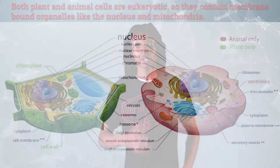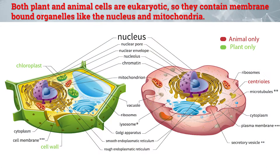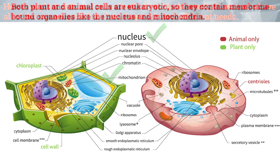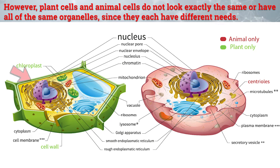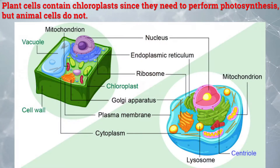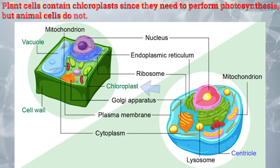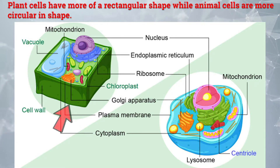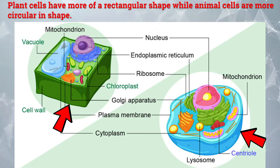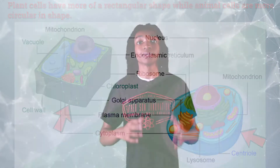Both plant and animal cells are eukaryotic, so they contain membrane-bound organelles like the nucleus and mitochondria. However, plant cells and animal cells do not look exactly the same or have all the same organelles since they each have different needs. For example, plant cells contain chloroplasts since they need to perform photosynthesis, but animal cells do not. Plant cells have a more rectangular shape, while animal cells are more circular in shape.